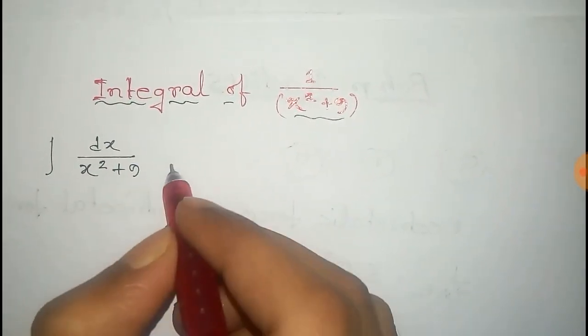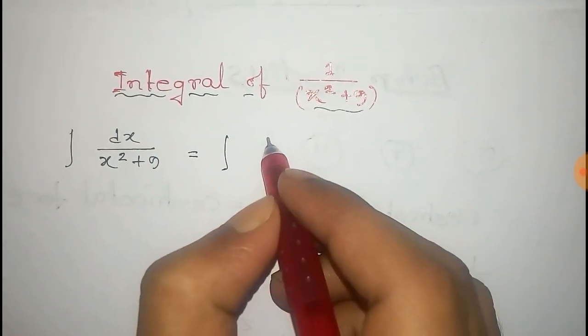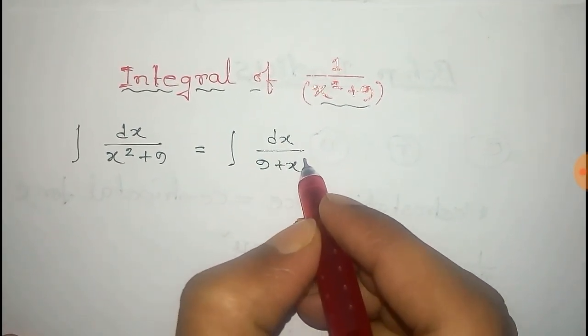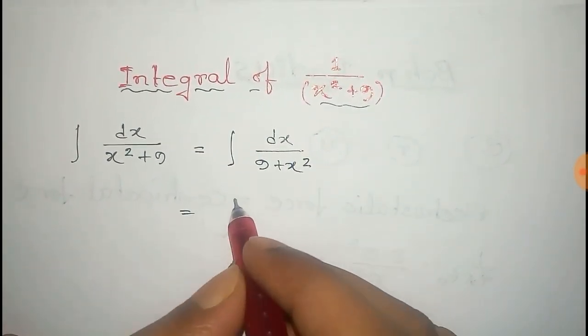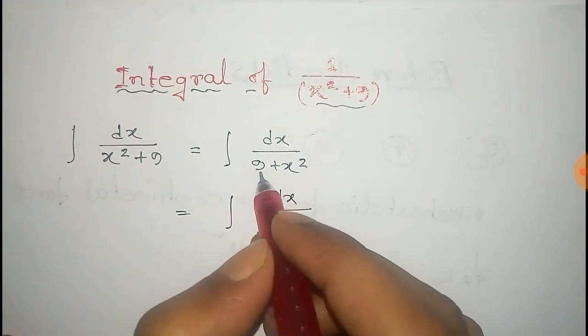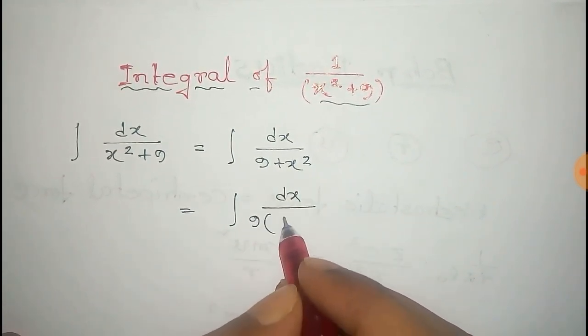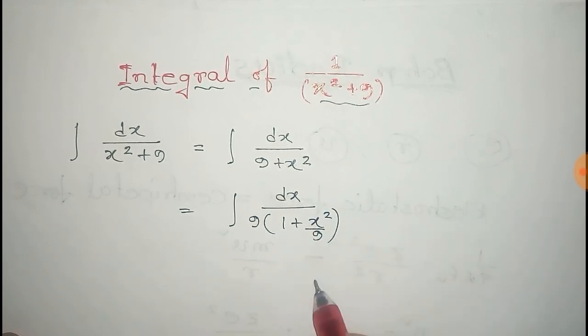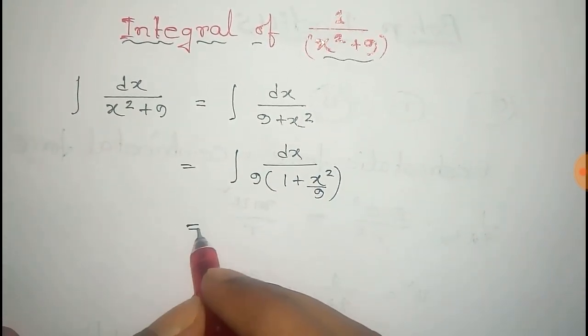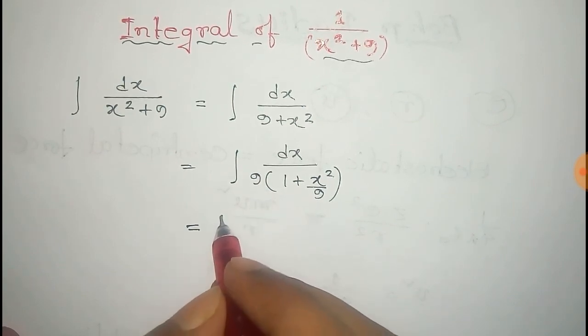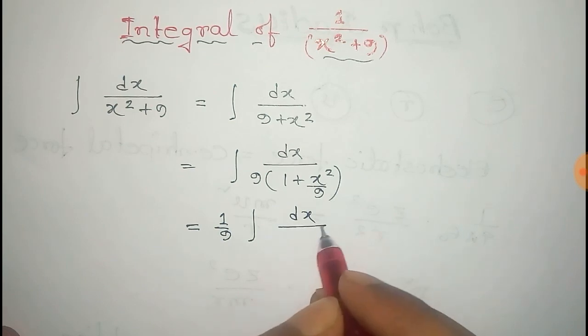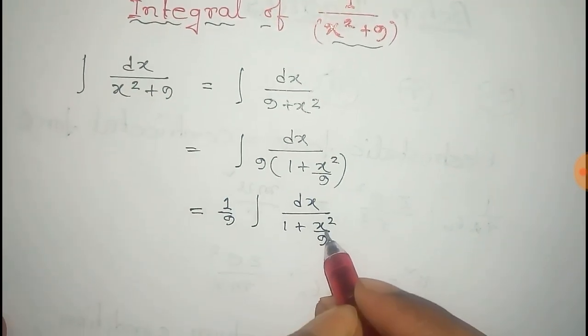We can write this integral as integral dx by 9 plus x square. Now take 9 common from these terms. So that is 9 times 1 plus x square by 9. Now we can take this constant out of the integral. So that is 1 by 9 integral dx by 1 plus x square by 9.